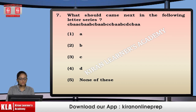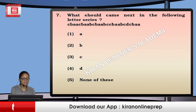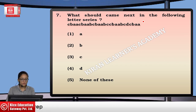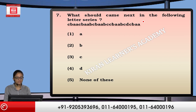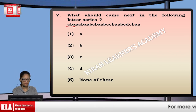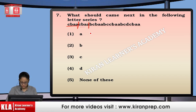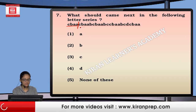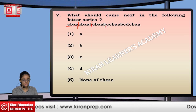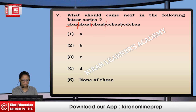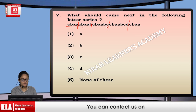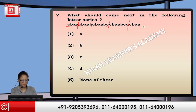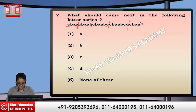Next: what should come next in the following letter series? This is a repeated series where alphabets repeat in the sequence. We break the series into 4-alphabet portions. The pattern shows: first only A, then B, then C, then D — each successive group has one more element. After the last group ending with D, we require AA followed by B. So the answer is option 2.